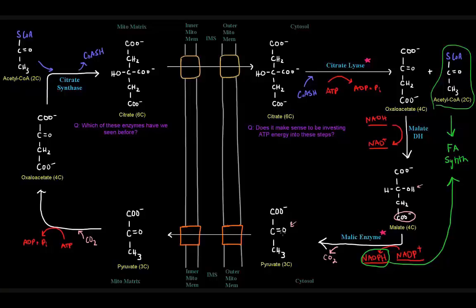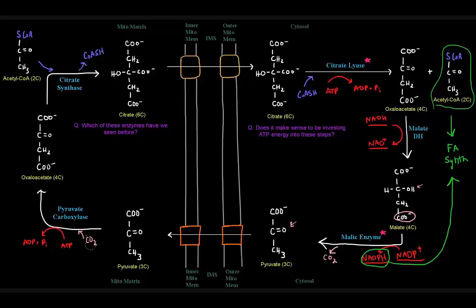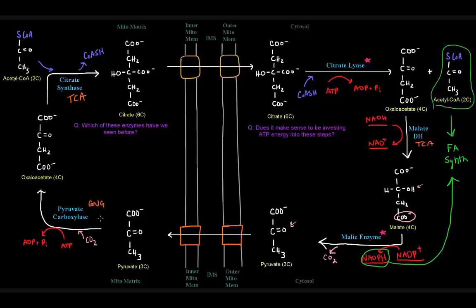Once we have this pyruvate, it can go across the outer and inner mitochondrial membranes back into the matrix, and then be turned back into oxaloacetate via the pyruvate carboxylase reaction. That requires an investment of ATP and a carbon dioxide for this carboxylation reaction — an enzyme we've seen before in gluconeogenesis. So to summarize: citrate synthase and malate dehydrogenase were seen in the TCA cycle, pyruvate carboxylase was seen in gluconeogenesis, and the new enzymes here are citrate lyase and malic enzyme.